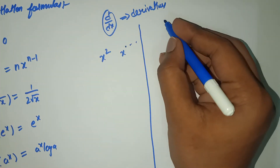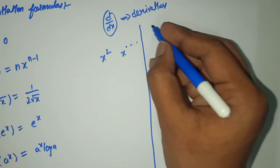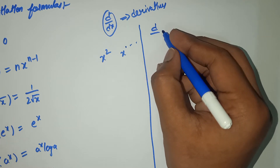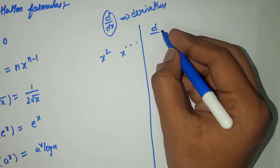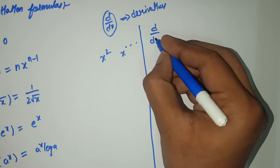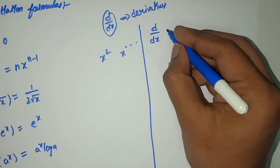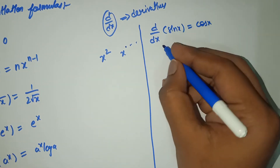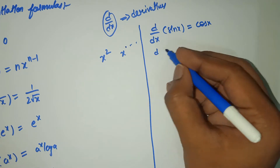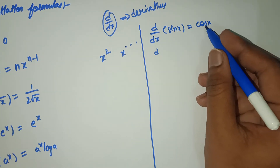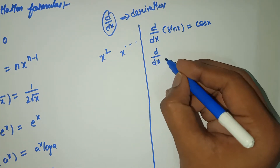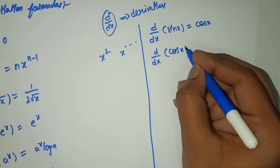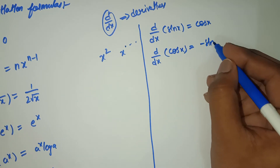Some other forms here — trigonometric formulas. Minus sign, cos, tan — all those trigonometric values come here. d by dx of sin x equals cos x. When it comes to sin, there is no negative value. But when it comes to cos, you will get a negative value. d by dx of cos x equals minus sin x.